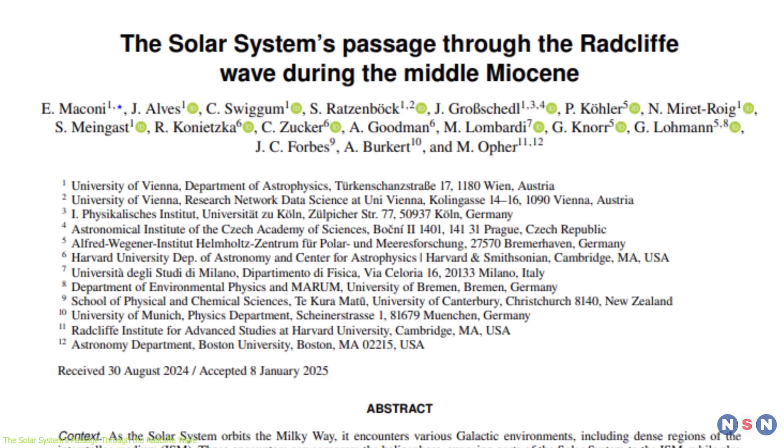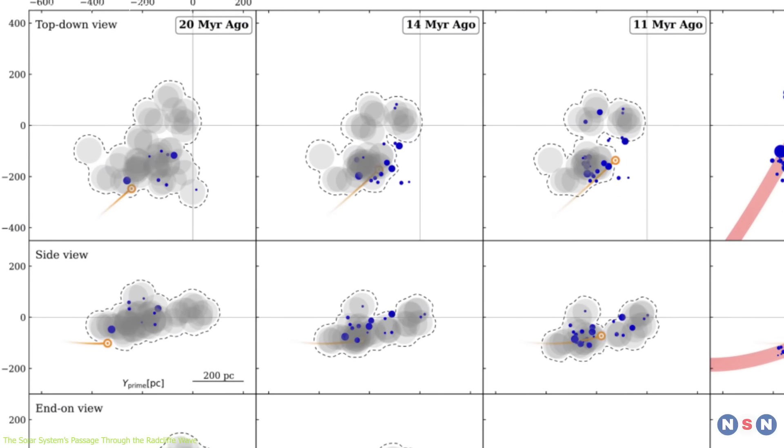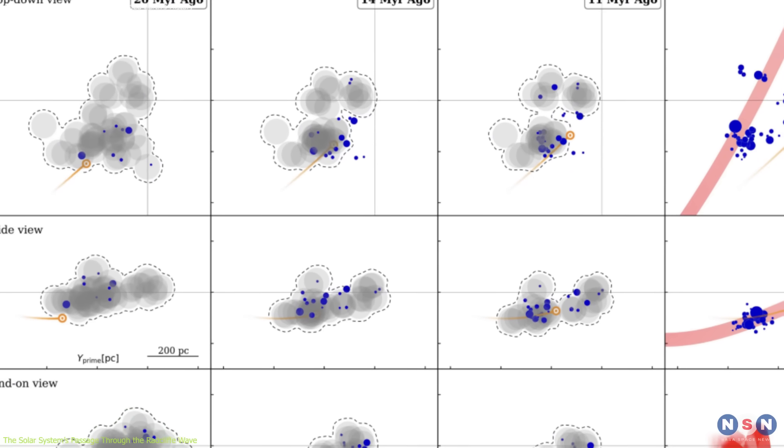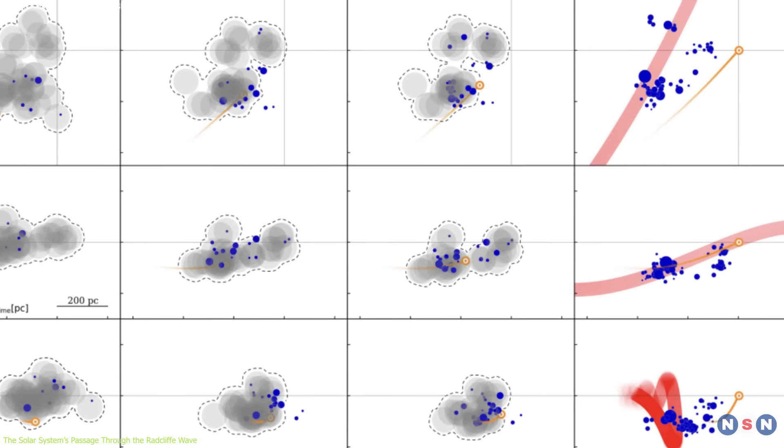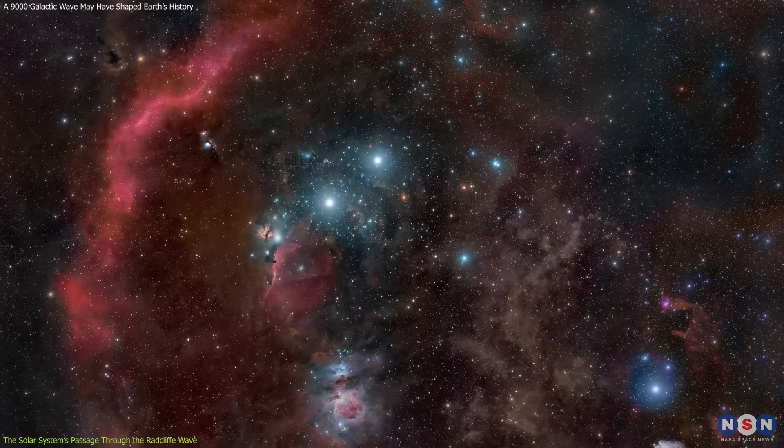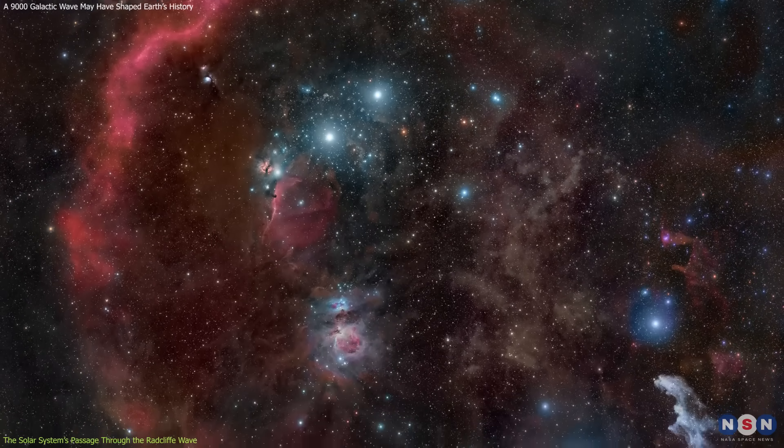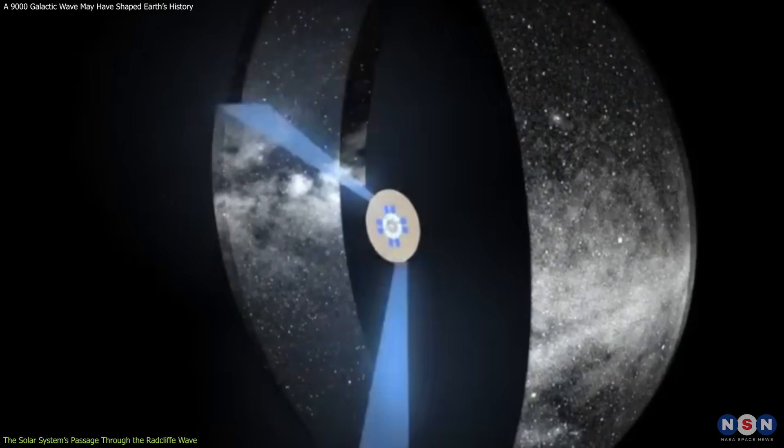One of the most fascinating revelations from recent research is that, between 14.8 and 12.4 million years ago, our solar system passed directly through a dense region of the Radcliffe Wave, specifically the Orion Star-Forming Complex. This finding was determined using Gaia data and spectroscopic observations.